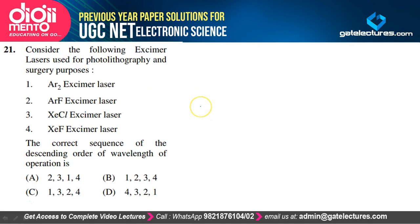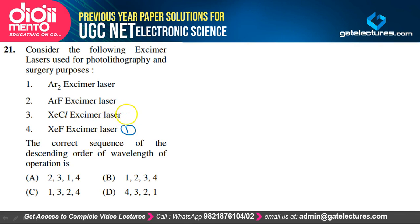For excimer lasers used in photolithography and surgery, the correct descending order of wavelength is: XeF (xenon fluoride) first, then XeCl (xenon chloride), then ArF (argon fluoride), then Ar2 excimer laser. Option D is the correct option.